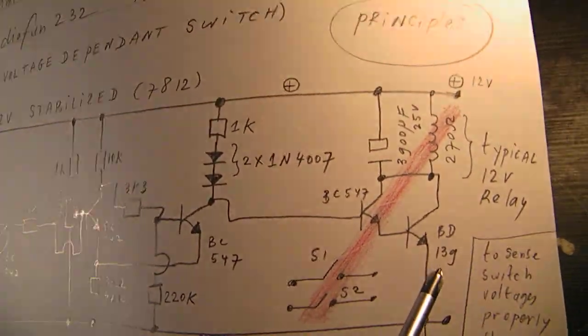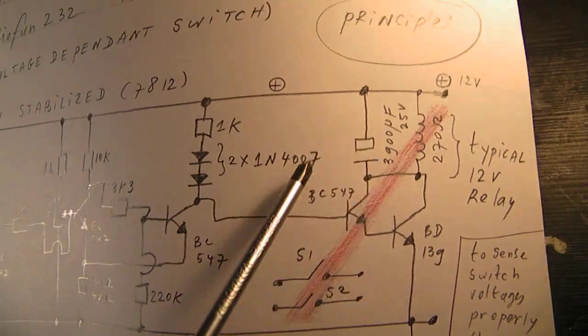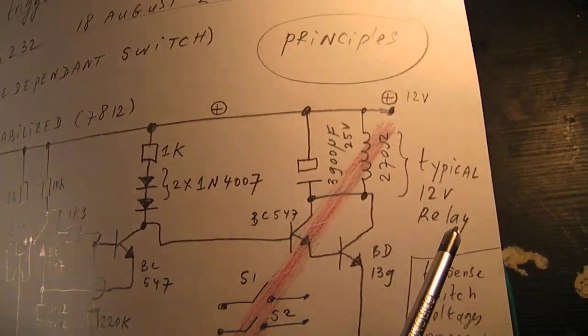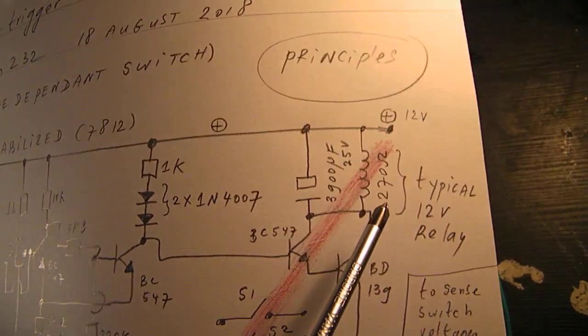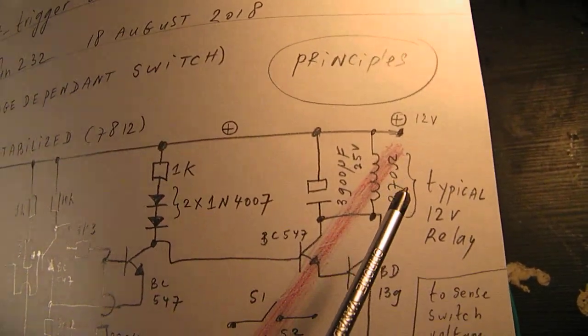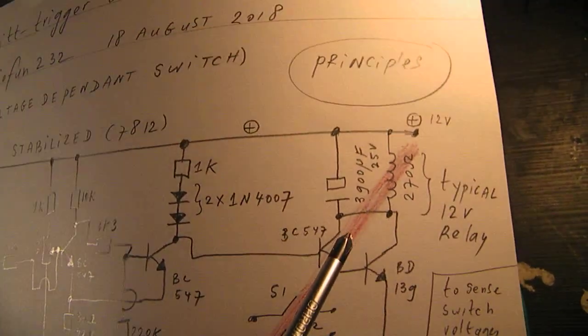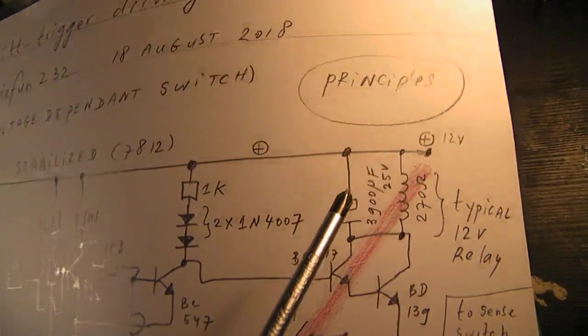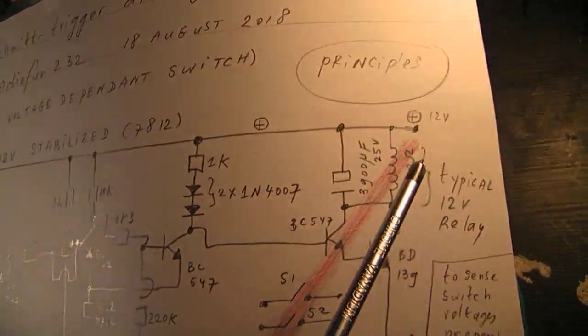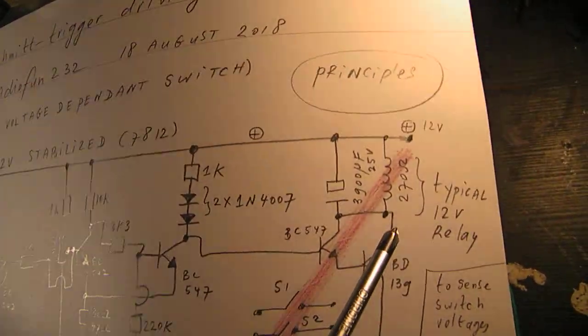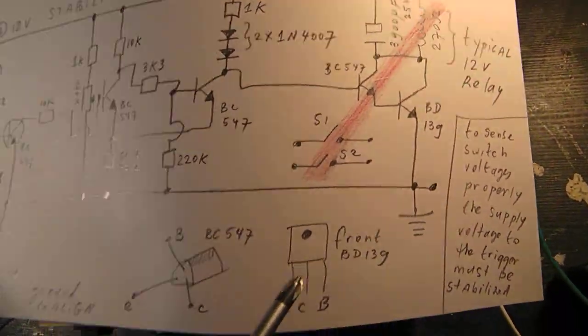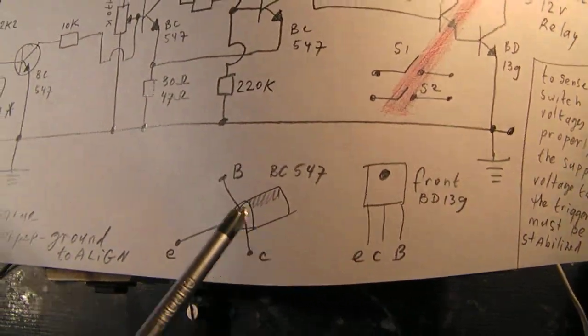Here you see how the Darlington is driven. This is the typical 12 volt relay, 270 dc ohms, bridged with a capacitor from say 3900 microfarad to keep the relay quiet when it has to switch. And here of course the transistor connections.